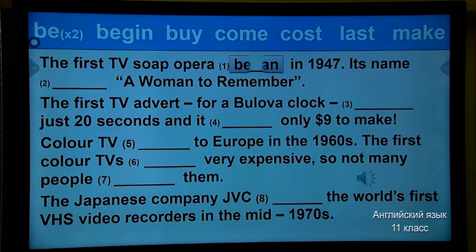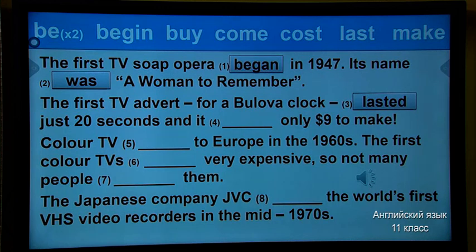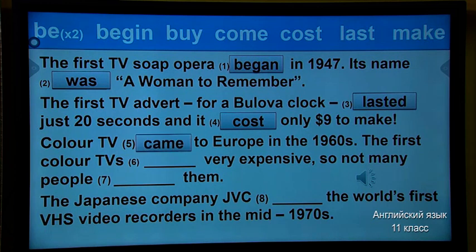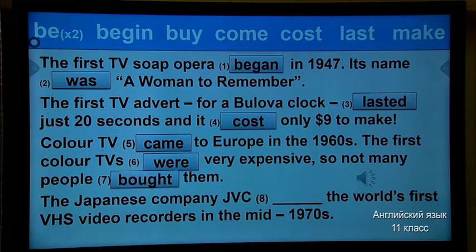The first TV soap opera began in 1947. Its name was 'A Woman to Remember'. The first TV advert lasted just 20 seconds and it cost only $9 to make. Color TV came to Europe in the 1960s. The first colored TVs were very expensive, so not many people bought them. The Japanese company JVC made the world's first VHS video recorders in the mid-1970s.